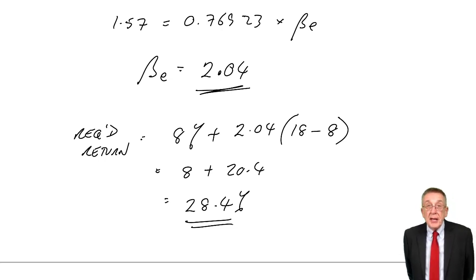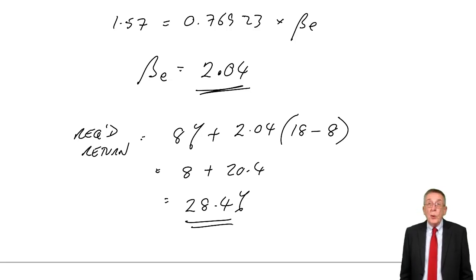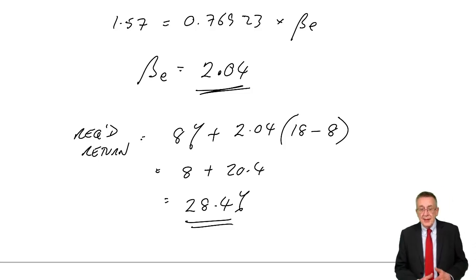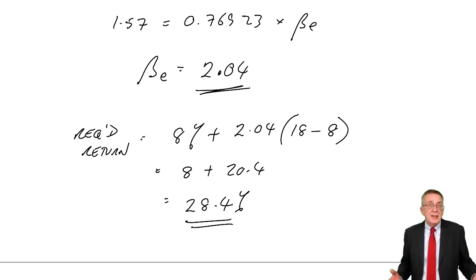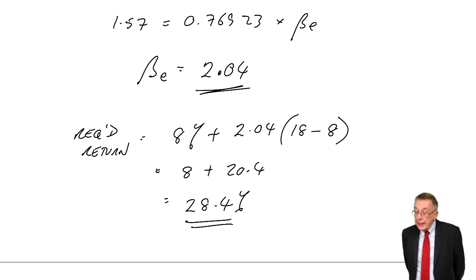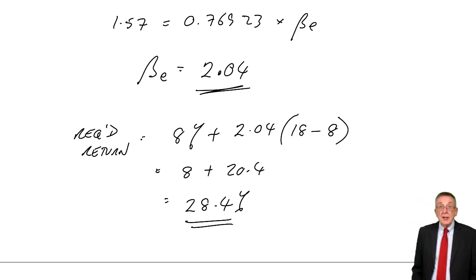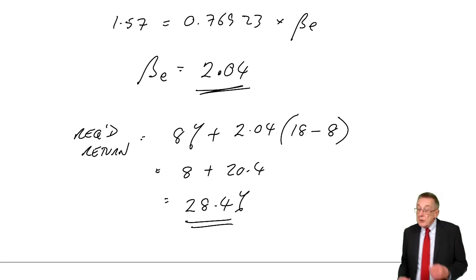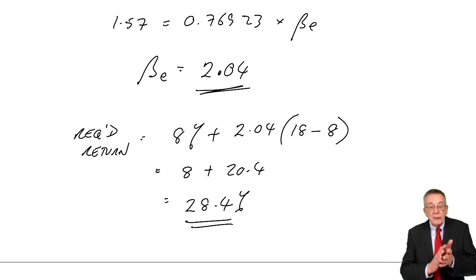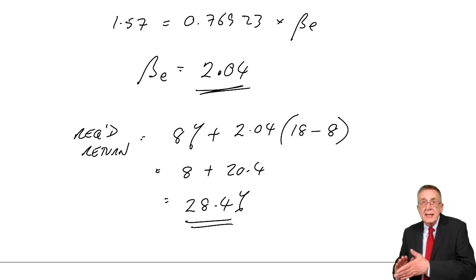That's as far as it goes at paper F9. When you come to later papers such as P4, you end up working out a weighted average cost of capital for the project and going a lot further. At F9, that's the most that can be asked, and you wouldn't be asked to do any discounting at 28.4% — it's not in the tables. It would purely be calculating this project-specific cost of equity.